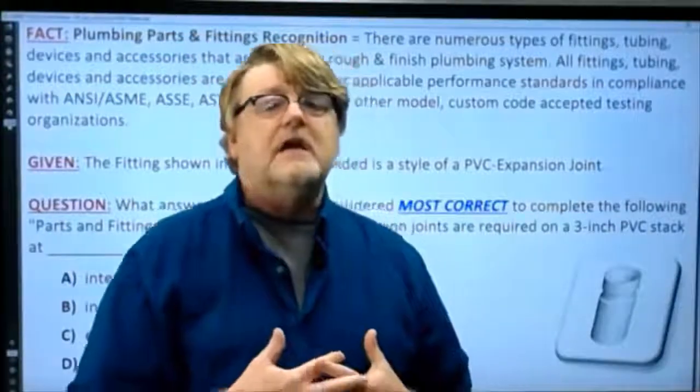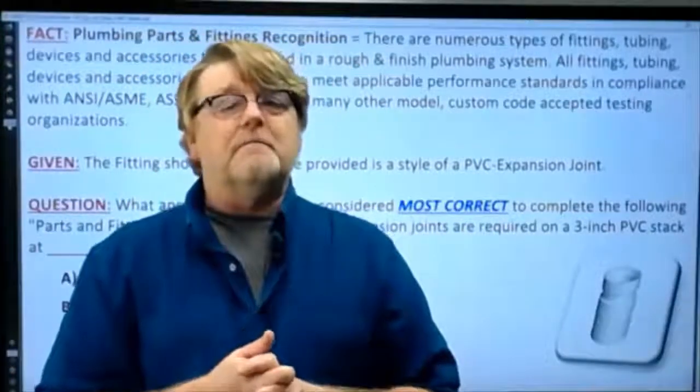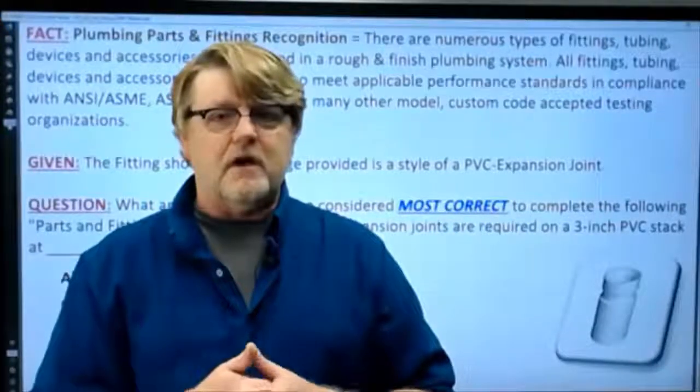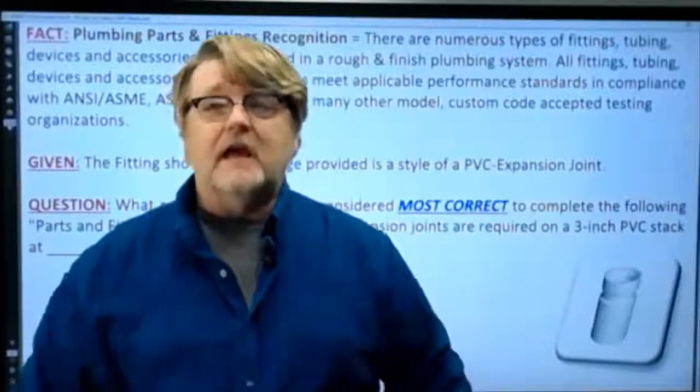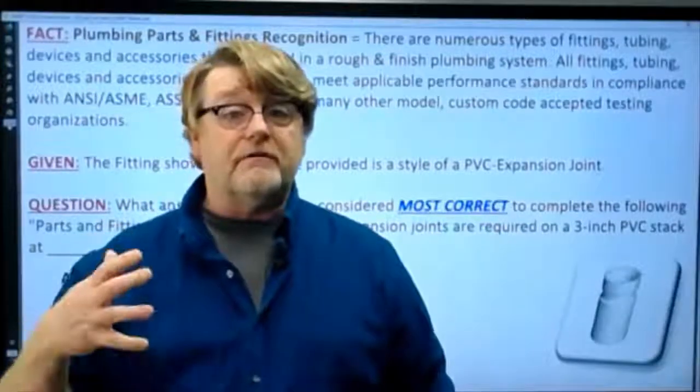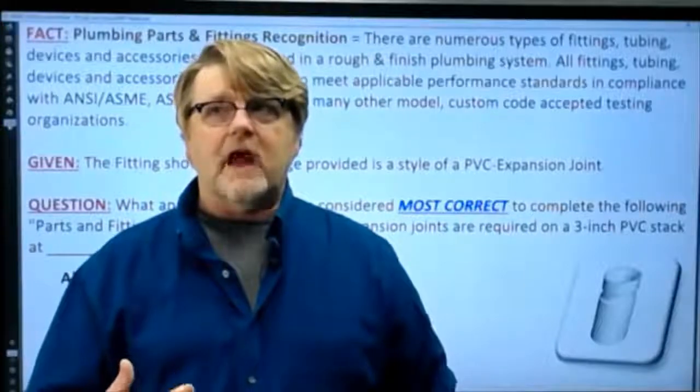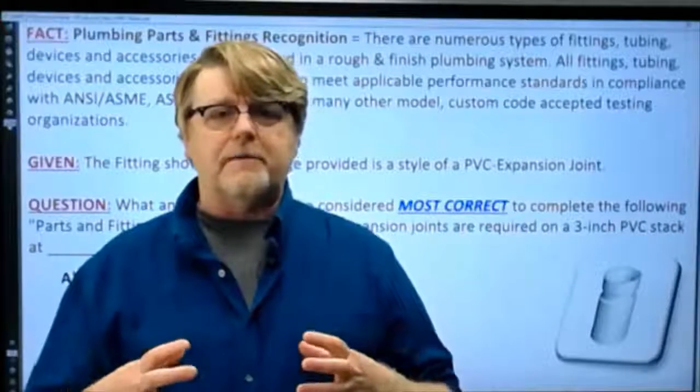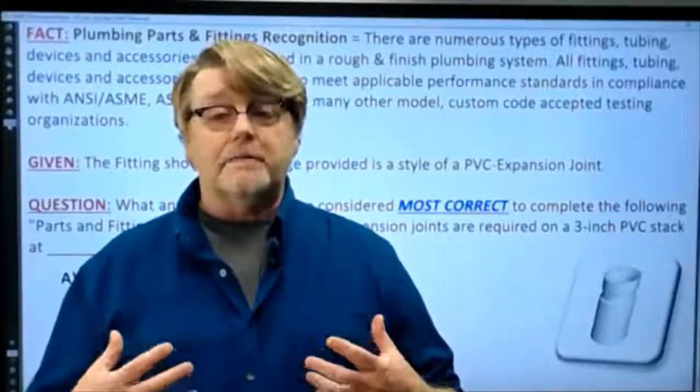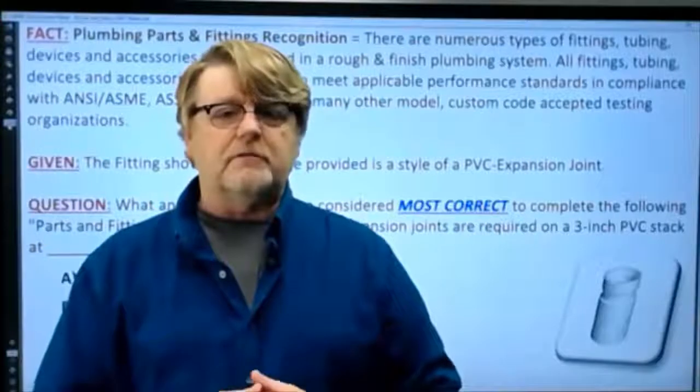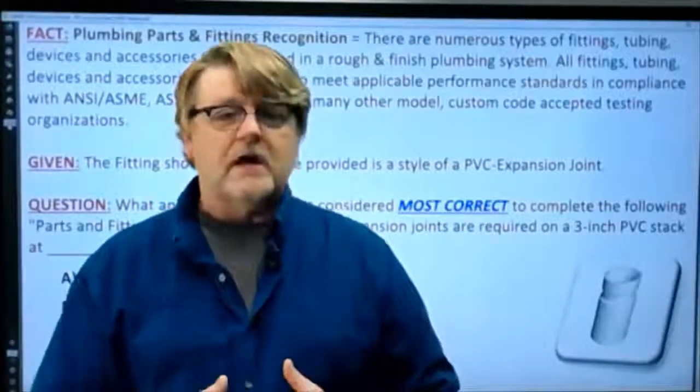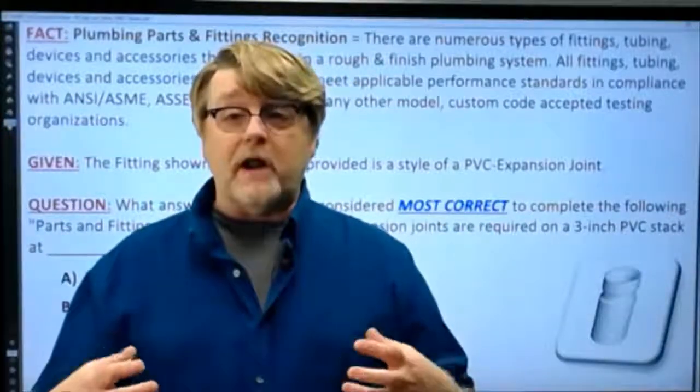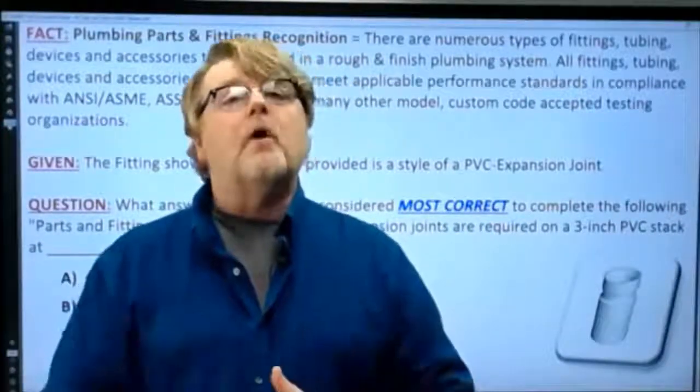PVC expansion joints are mainly used in the drainage, waste, and venting system of the plumbing system. They're used on the vent, on the waste, and they prevent expansion and contraction of the piping. In residential and commercial buildings across the country, we have PVC expansion joints to help us take up what happens when hot water is poured down a drainage system.